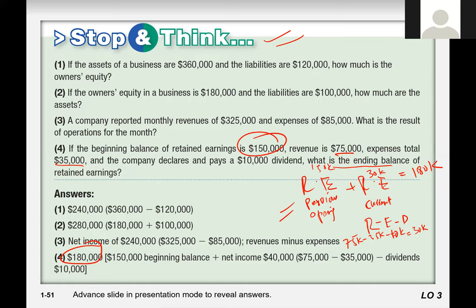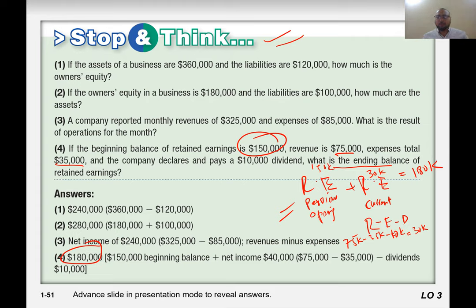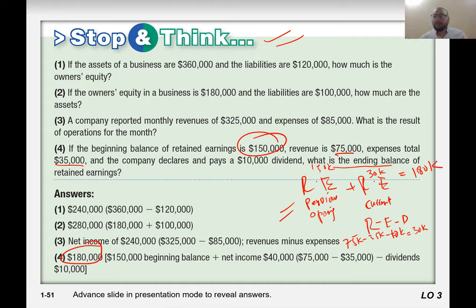As I said, more numbers can mean more confusion. You need to pay close attention to the dates, the numbers, and the formula. This solution is more advanced because it combines everything into one formula — that's why it's confusing. But if you understand the logic, you can handle any number of variables.